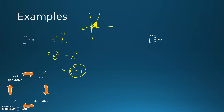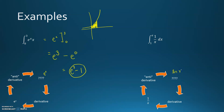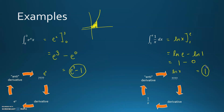For the integral of 1/x, the antiderivative is natural log of x. Evaluating from 1 to e: natural log of e minus natural log of 1 equals 1 minus 0, which equals 1. And that's how you use antiderivatives to evaluate integrals.